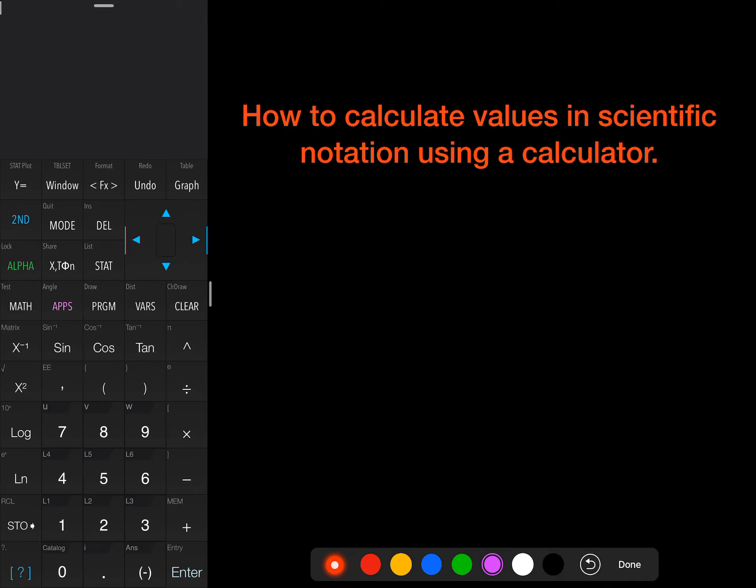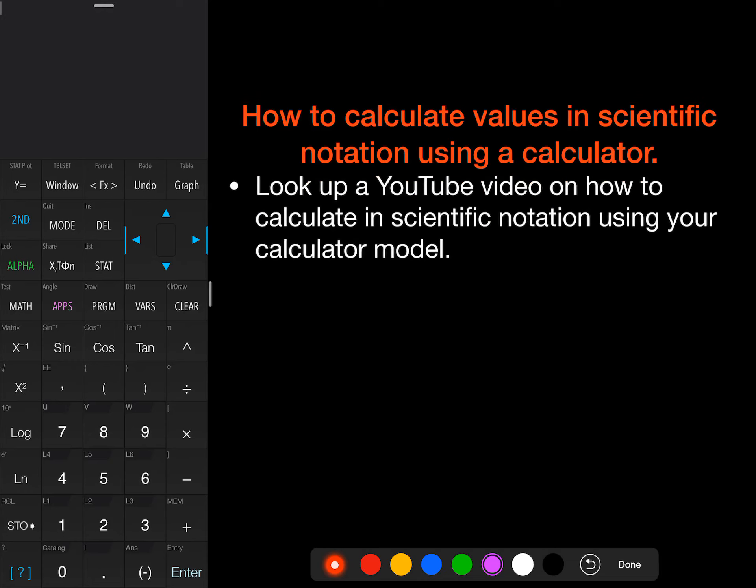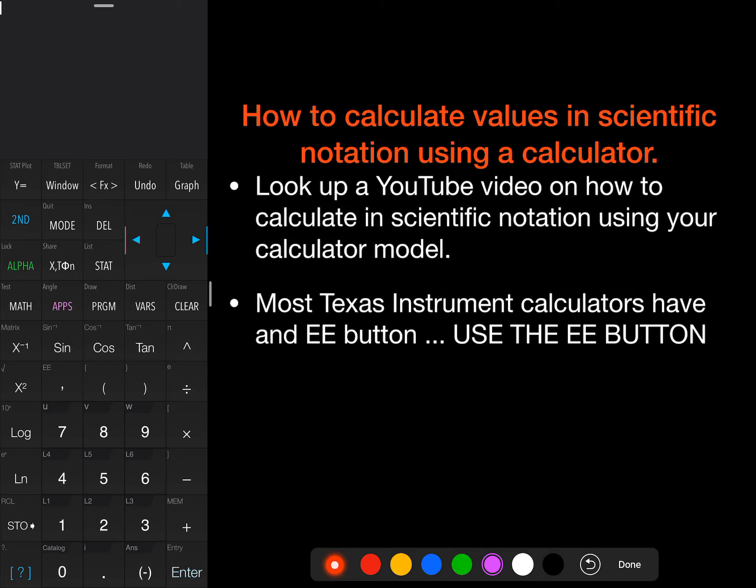So how do we calculate values in scientific notation using a calculator? Well, it's a good idea to look up a YouTube video on your specific calculator and using that in scientific notation. I am available to help with that in class as well. Most Texas instrument calculators have what we call an EE button. And I'm going to show you that in just a moment on some pictures. If you have an EE button, use the EE button.